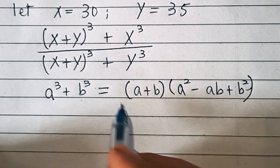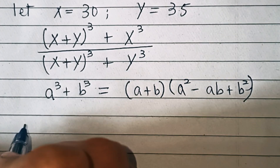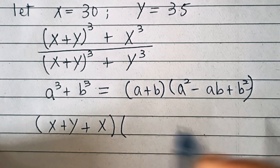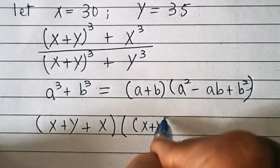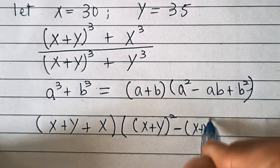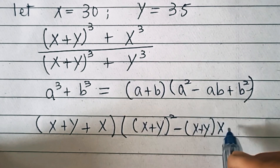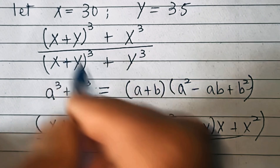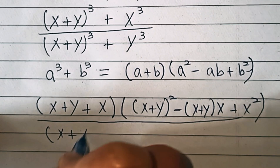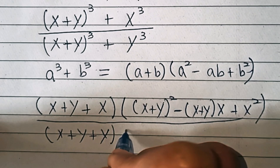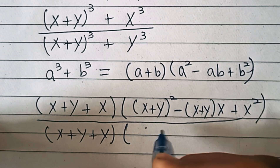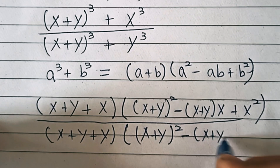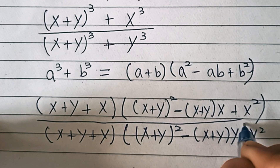We can expand the numerator: here a is (x+y) and b is x. So the numerator becomes (x+y+x) times [(x+y)² - (x+y)x + x²]. In the denominator we have (x+y+y) times [(x+y)² - (x+y)y + y²].